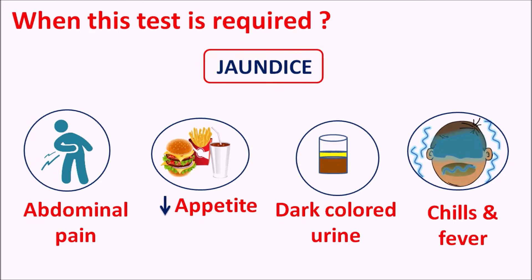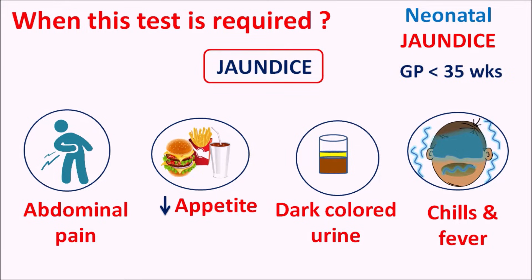Jaundice can also be observed in newborns, called neonatal jaundice. Particularly, newborns delivered before 35 weeks gestational period may have less weight and underdeveloped liver and excretory system, so bilirubin levels are increased due to lack of sufficient conjugation. In neonates, symptoms include yellowish discoloration of the skin and eyes, itching of eyes, chills, fever, and decreased appetite — all of which should be thoroughly controlled.